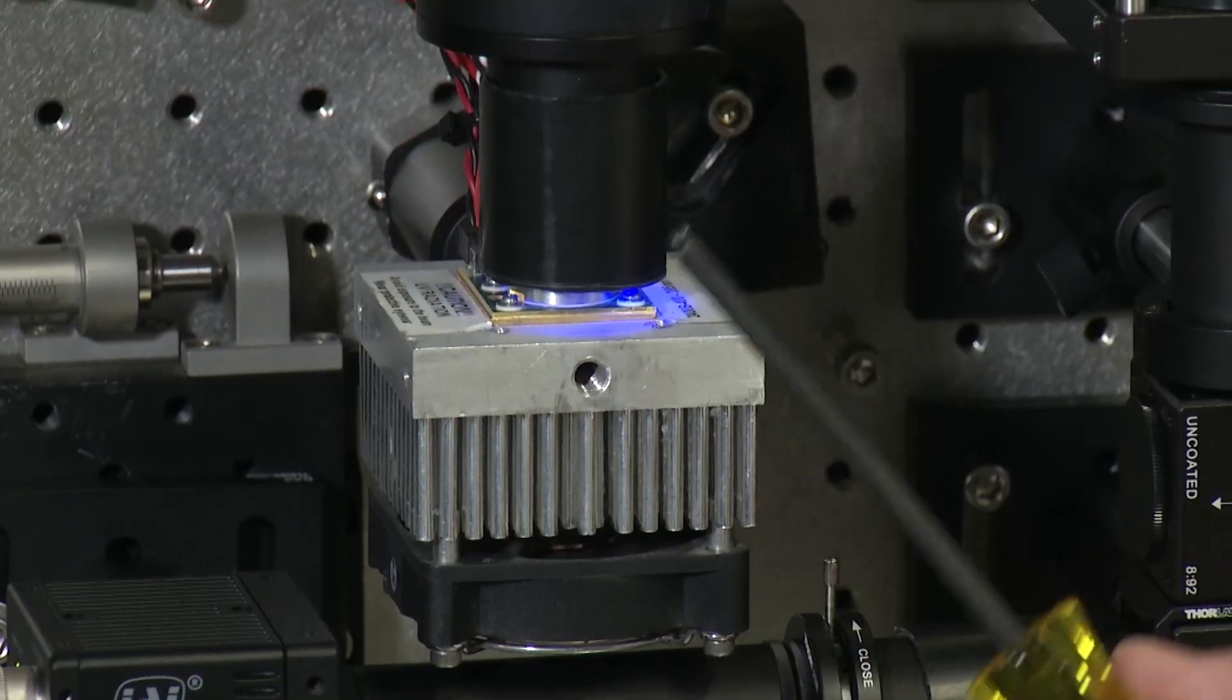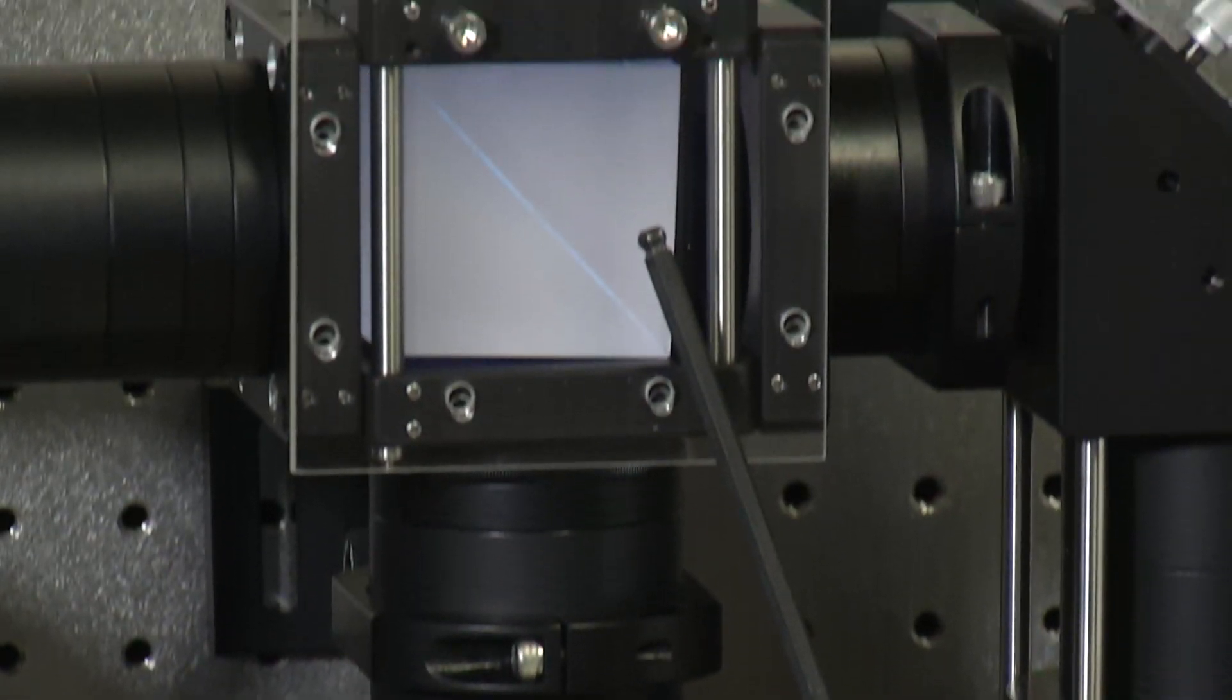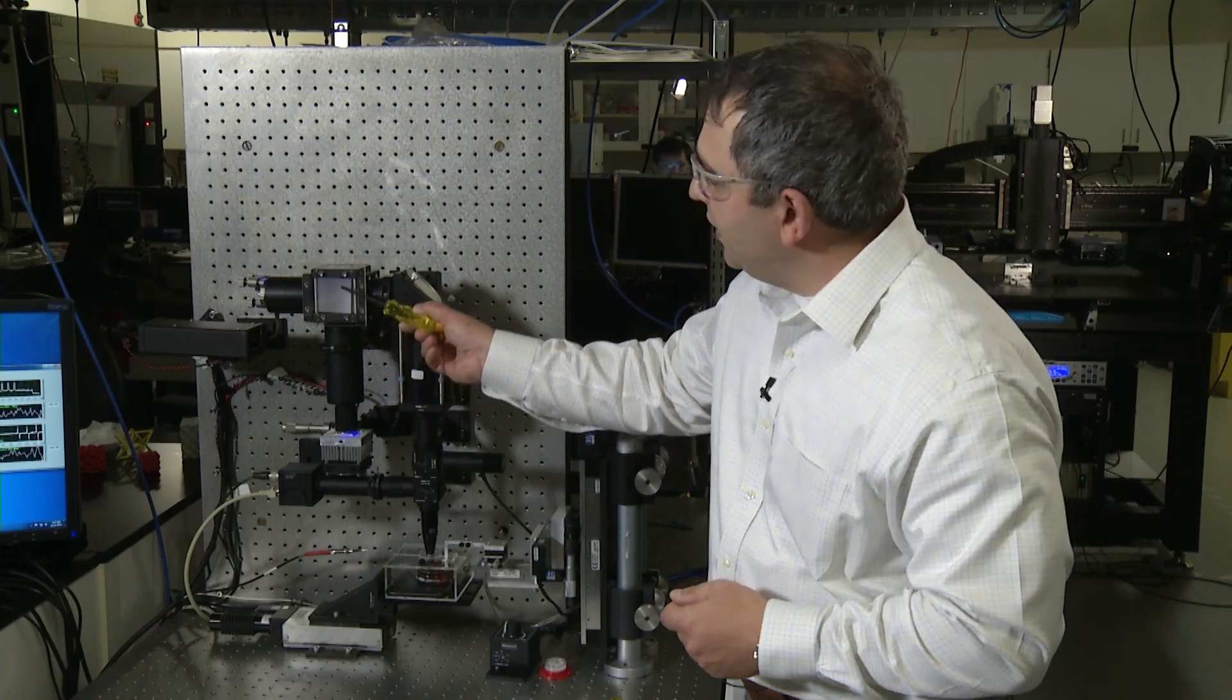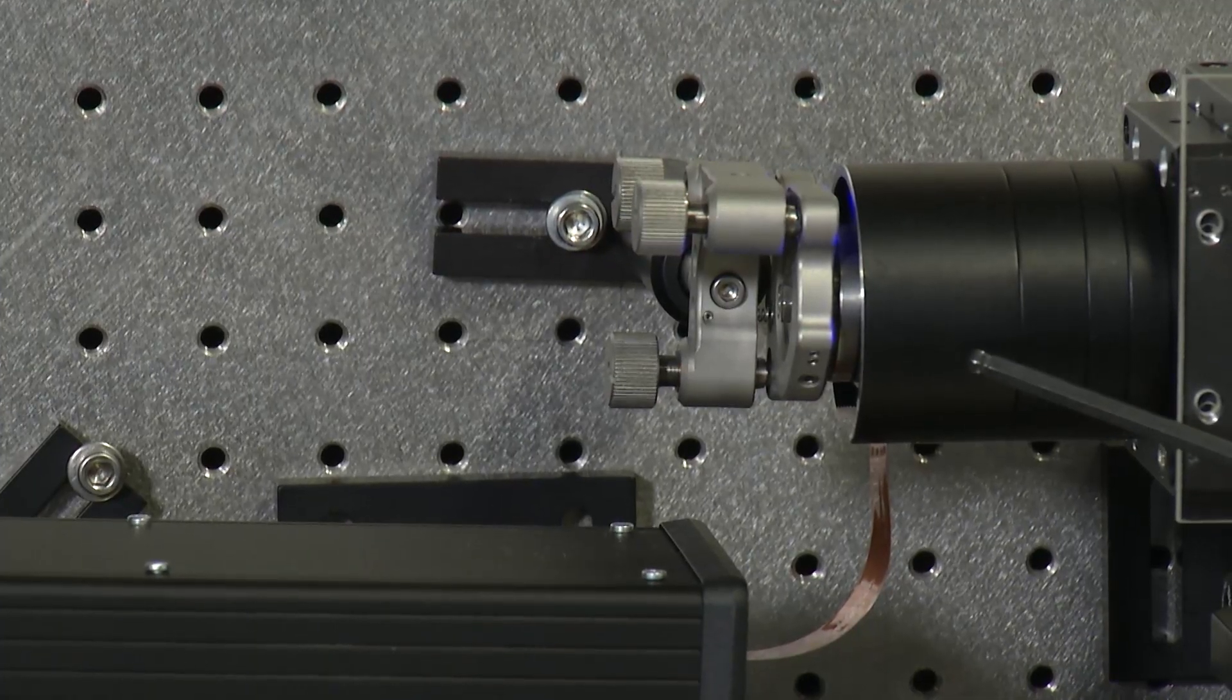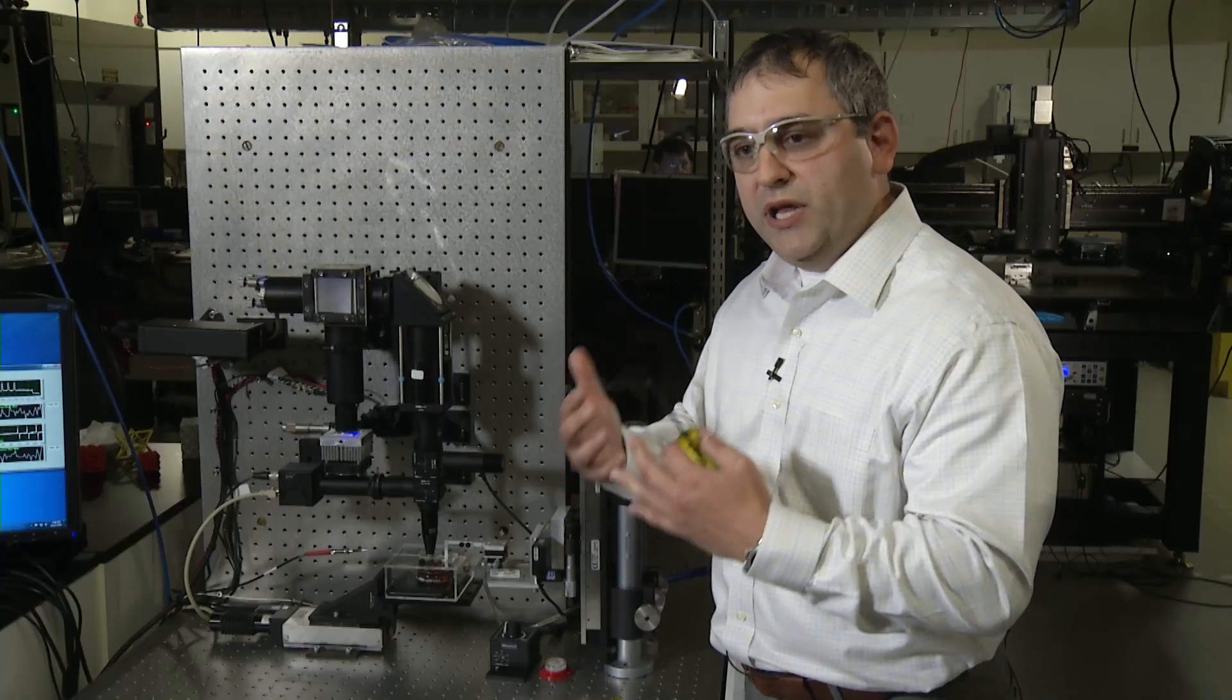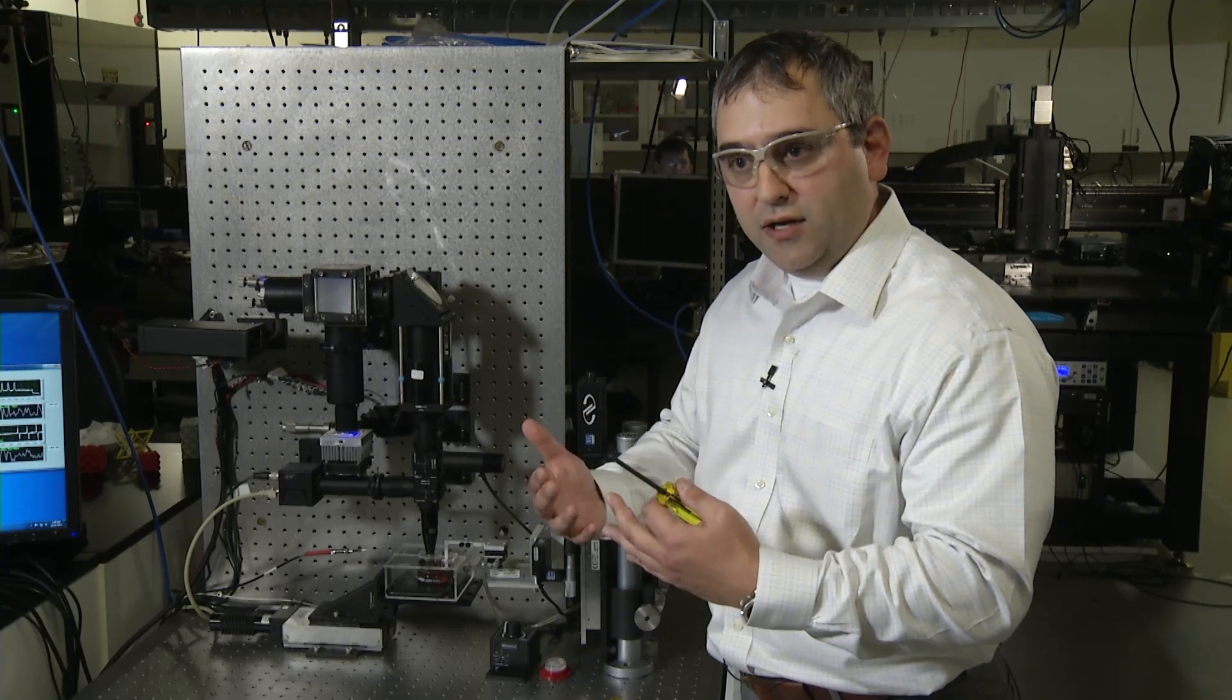It starts here with a light source. Light comes up through this tube into this cube, which is a beam splitter. It comes over here, and on the end of this ribbon cable, it's essentially a mini monitor or screen that's reflective.